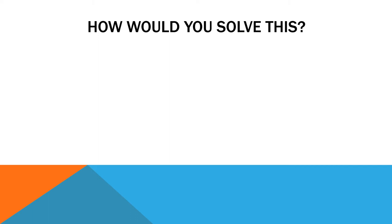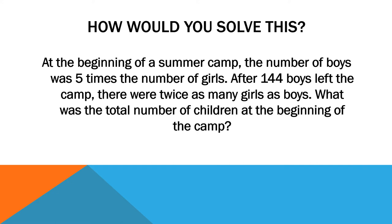To start off, I'd like to give you a problem and have you think about how you might solve it. If you've got a way to solve it, feel free to try. Here it is: At the beginning of a summer camp, the number of boys was five times the number of girls. After 144 boys left the camp, there were twice as many girls as boys. What was the total number of children at the beginning of camp?